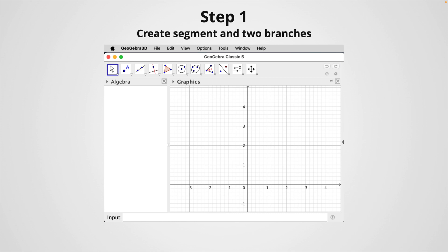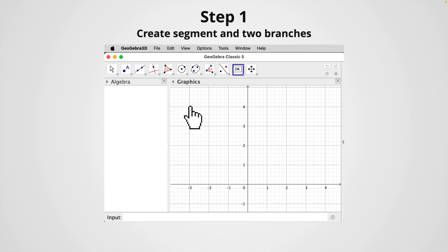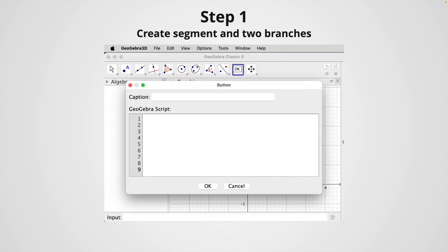Step number one, here we're going to create a segment and two branches. To start, we click and hold for a second on the slider tool, that is the second icon from the right to the left. This will show the list of tools available and we are going to select the tool button. Then we click on the graphics view to create a button and the following window will pop up. And here we're going to type some GeoGebra commands. This technique is known as scripting and is incredibly useful to create applets in GeoGebra.